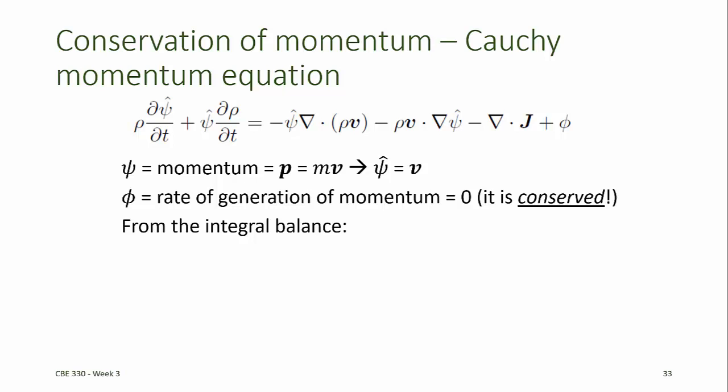Beginning with the differential form of the generalized balance equation, we can now derive the conservation of momentum, or what's called the Cauchy momentum equation. Momentum, you'll remember, is mass times velocity. So momentum per mass, or psi hat in this case, is simply the velocity.